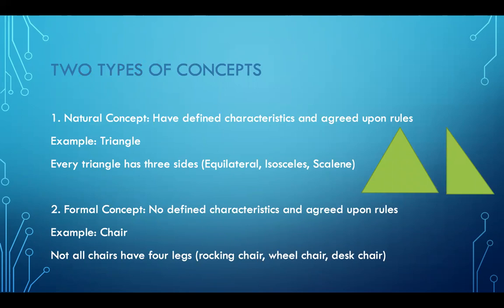There are two types of concepts. A natural concept has defined characteristics and agreed-upon rules — for example, a triangle. Every triangle, by definition, has three sides regardless of its type; it can't have four sides. A formal concept does not have defined characteristics and agreed-upon rules — for example, a chair. Chairs come in many different forms: rocking chairs, wheelchairs, desk chairs. Not all chairs have four legs, so the rules are not necessarily universal.